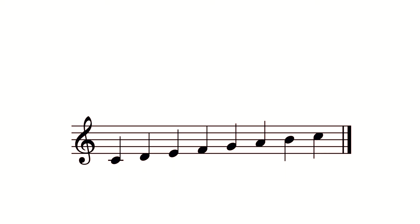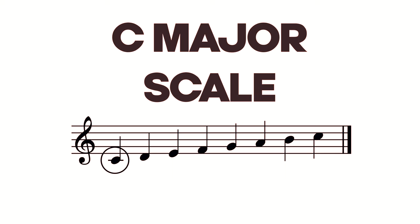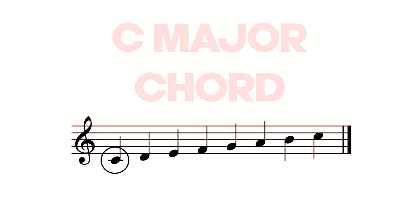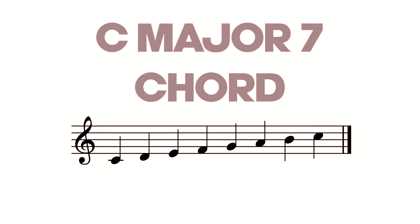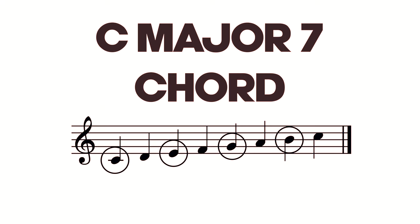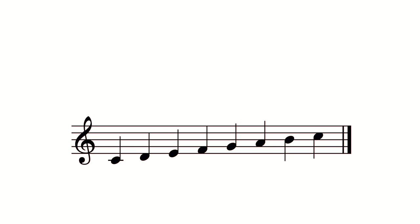I want to remind you that chords are pretty much just scales played every other note. So a three-note chord would be the first, third, and fifth note of the scale, or a four-note chord — which is called a seventh chord — is the first, third, fifth, and seventh note of the scale. The scale degree numbers are often in the chord names themselves.